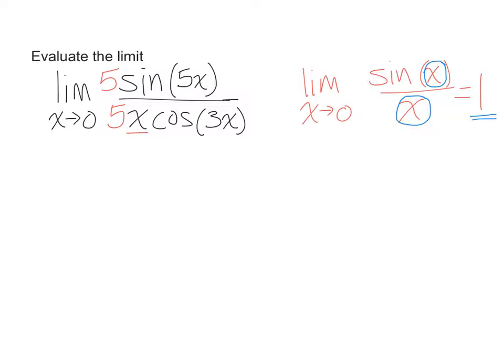And let's rewrite this. So this limit equals the limit as x goes to 0 of 5 sine of 5x all over 5x cosine 3x.